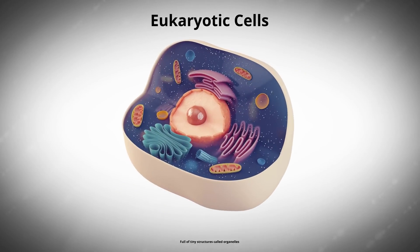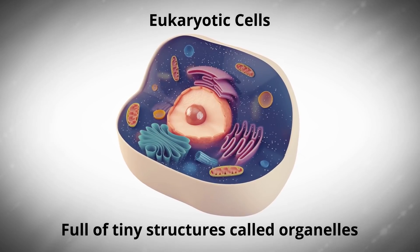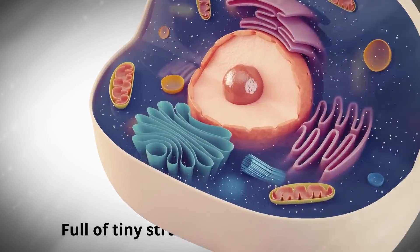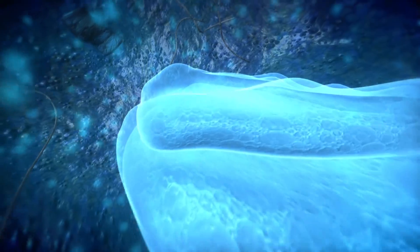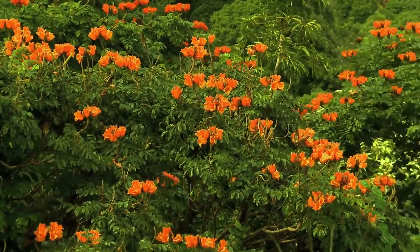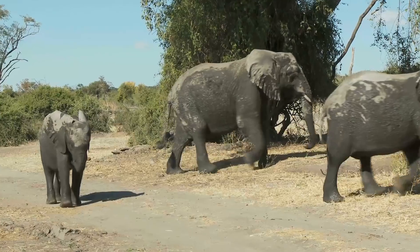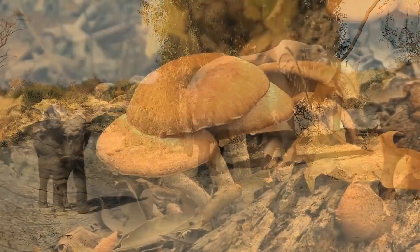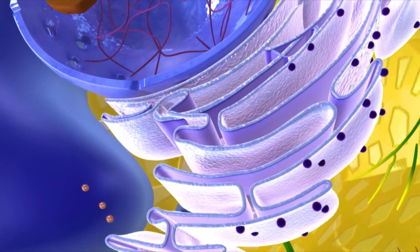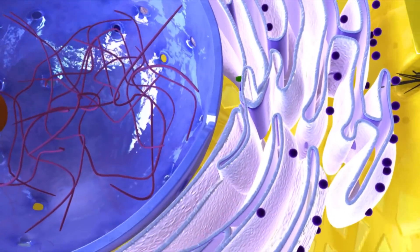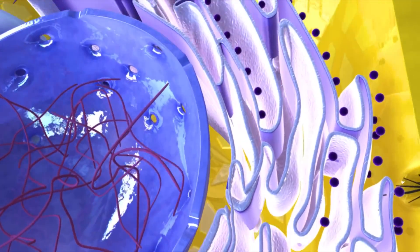A eukaryotic cell, on the other hand, is full of tiny structures called organelles, each performing a very specific function within the cell. Eukaryotic cells are present in plants, animal, and fungi cells. Let's examine these structures in more detail and see how they function in a eukaryotic animal cell.